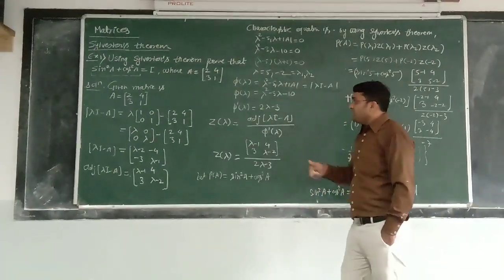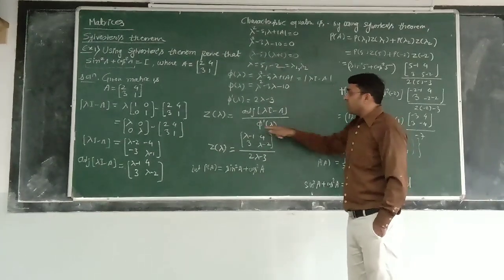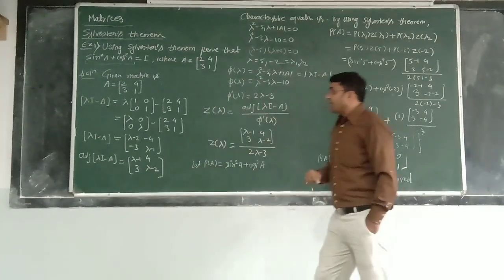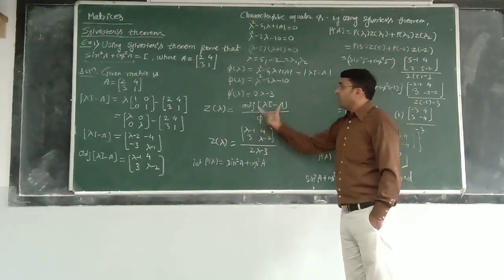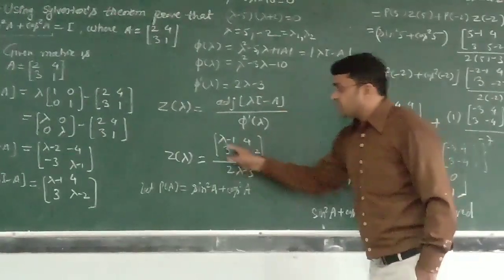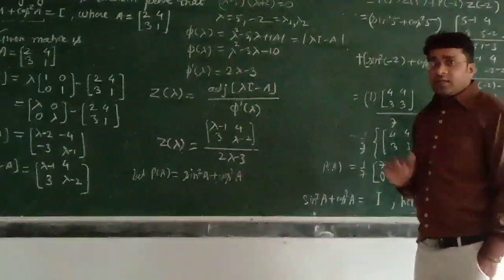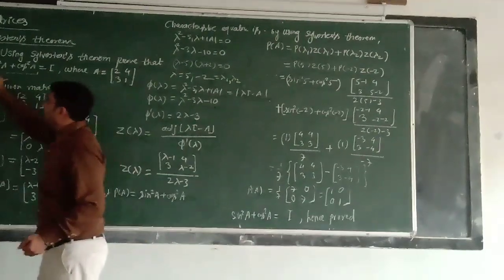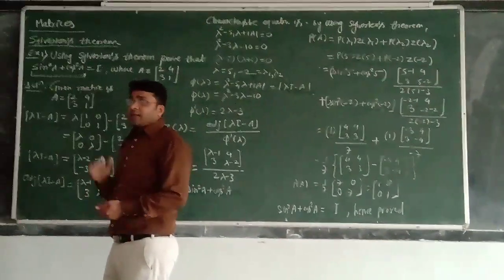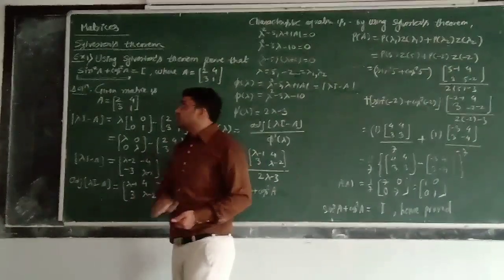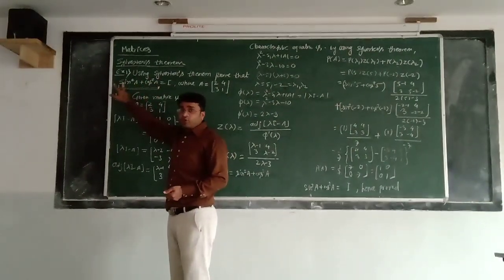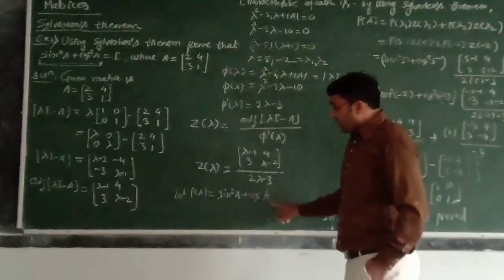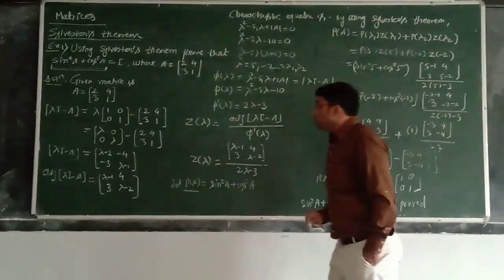Then we define z of lambda according to our Sylvester theorem. We define always the LHS part, whatever we have to prove. The LHS part has P of A. It is sin square A plus cos square A. So, we have defined the P of A as sin square A plus cos square A.